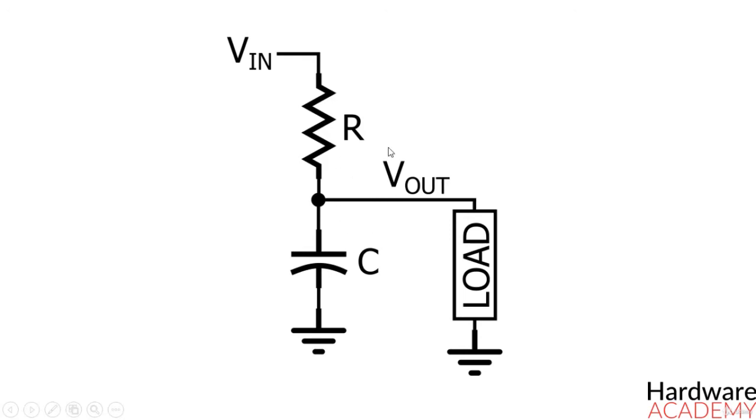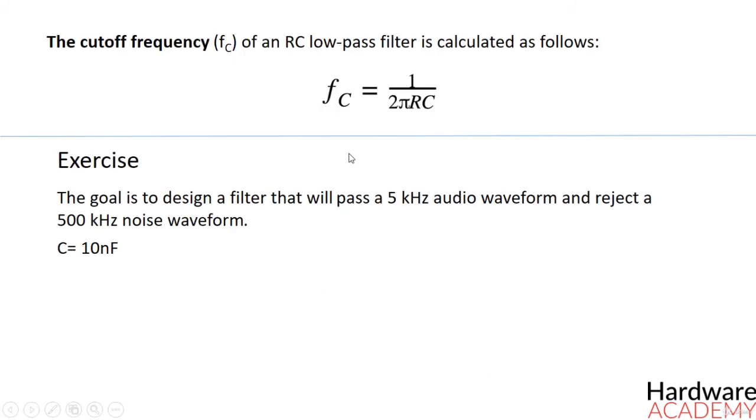To determine the details of a filter's frequency response, we need to mathematically analyze the relationship between resistance and capacitance, and we can also manipulate these values in order to design a filter that meets precise specifications. The cutoff frequency of an RC low-pass filter is calculated using this formula here.